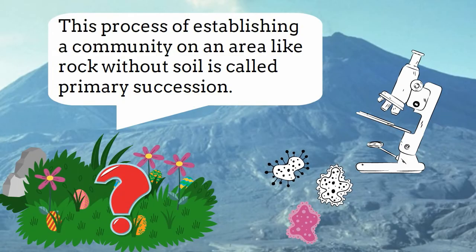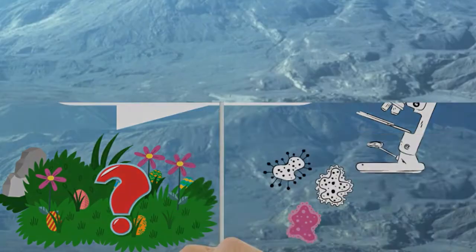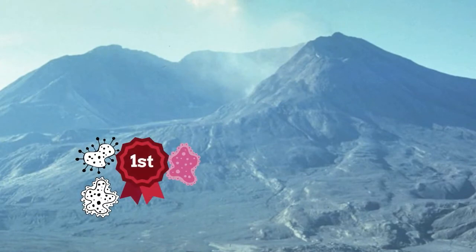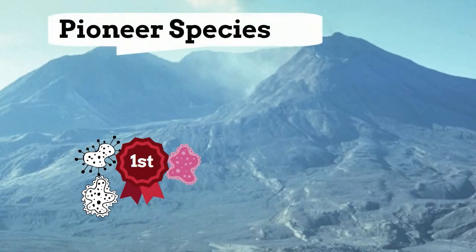Many times lichens and moss will begin to grow on the rock. Because they are the first living things to appear and grow, they are called the pioneer species.